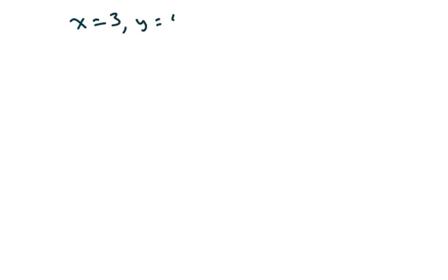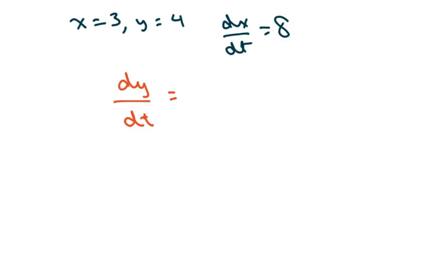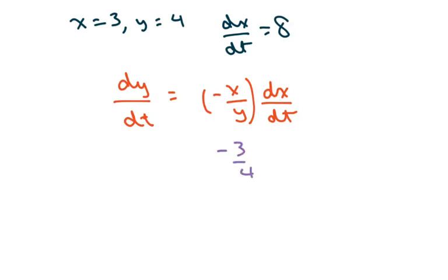Then we just fill everything in. The first case is when x is 3, y is 4, and dx/dt equals 8. Using the formula dy/dt equals negative x over y times dx/dt, we substitute to get negative 3 over 4 times 8. That gives us negative 6.